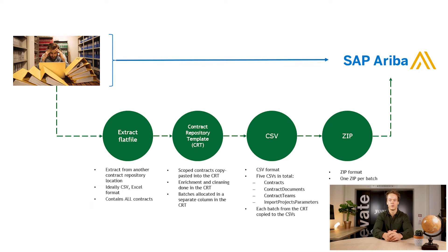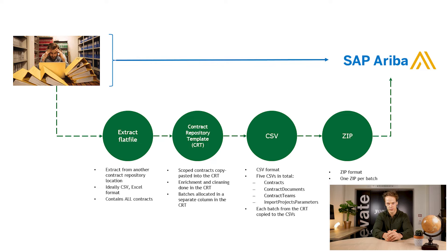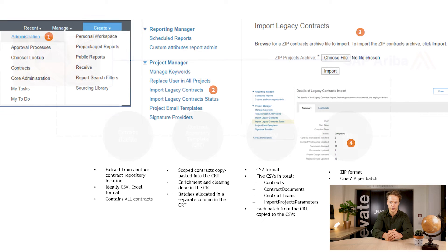On a high level, when you want to perform contract migration you need to collect all the contract information from the contract repository systems that you want to phase out. With that, you can populate the contract repository template provided by Ariba to start cleansing and enriching your data. Afterwards you create or generate the four required CSV files to put in zip files, which need to be uploaded separately, and ultimately use the legacy contract import feature in the Ariba interface to load the zip files and create your contract workspaces.